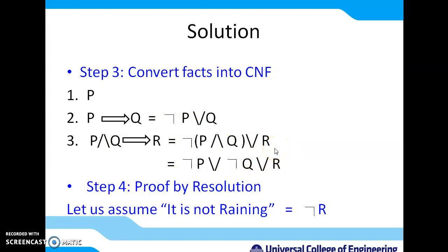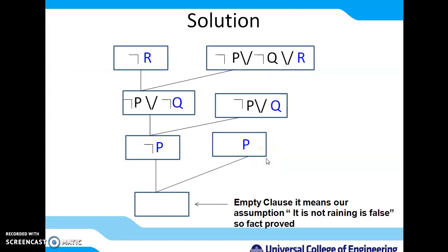We need to prove 'it is raining' (R). By proof of contradiction, we assume NOT R — 'it is not raining'. We look for terms contradicting NOT R. In the third CNF clause NOT P OR NOT Q OR R, the term R contradicts NOT R — these cancel each other (shown in blue), and what remains is NOT P OR NOT Q.